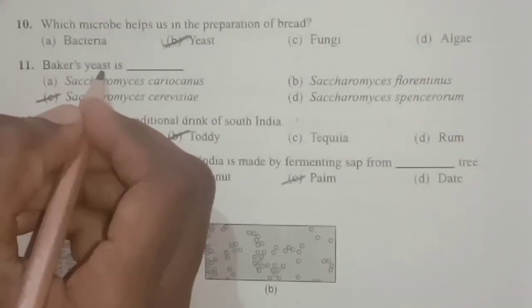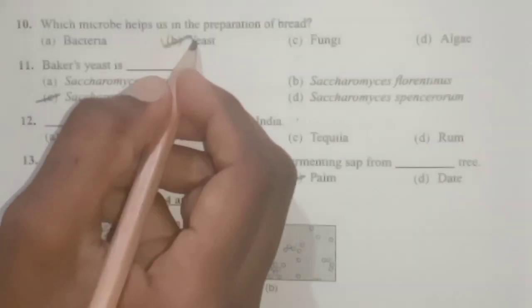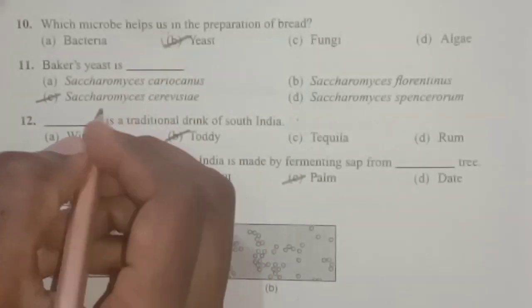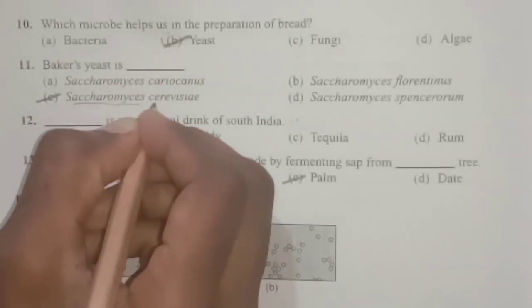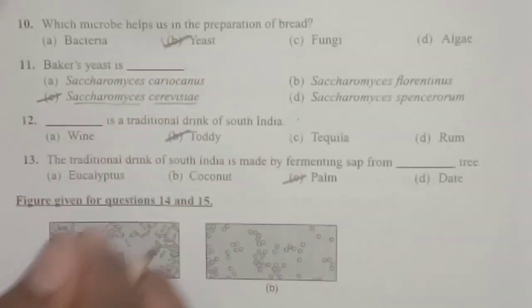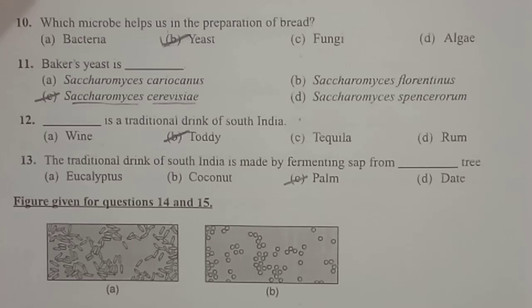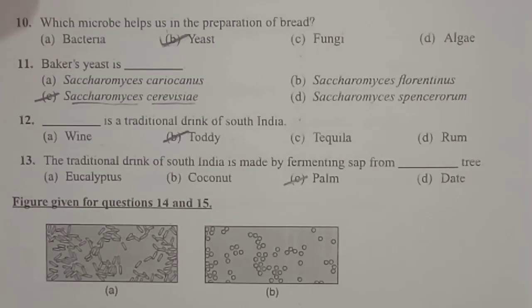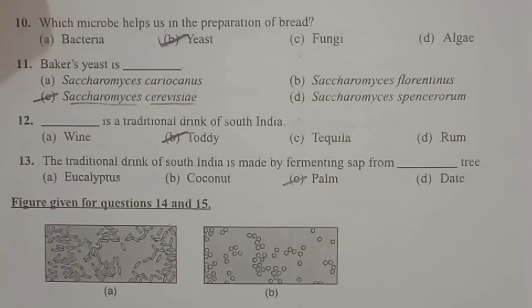Next: baker's yeast — its scientific name is Saccharomyces cerevisiae. The spellings are very, very important. So baker's yeast, its scientific name is Saccharomyces cerevisiae.